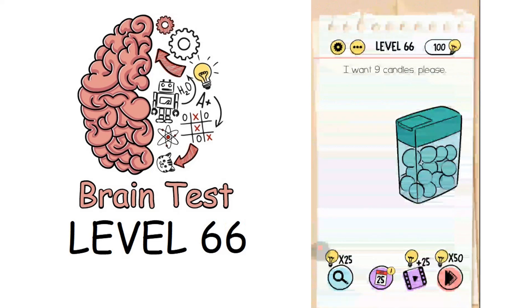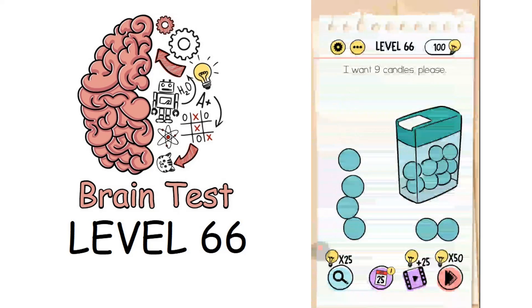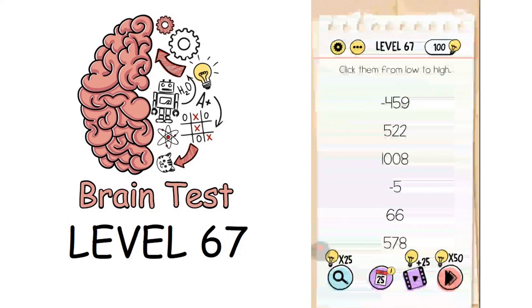Now we're on to level 66: I want nine candies please. This is a candy box, open it and then move the phone upside down. Three candies will come in. Move the phone upside down again and there will be three more candies. Again, if you move it, there are nine candies spilled from the candy box.